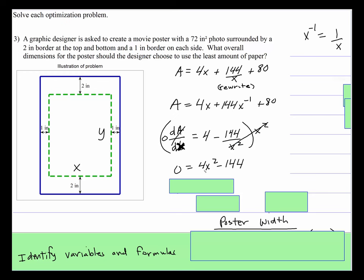Well, 4 and 144 have a 4 in common, so divide everything by 4. 0 divided by 4 is still zero. That's going to cancel. And 144 divided by 4 is 36. So now you have x squared minus 36.